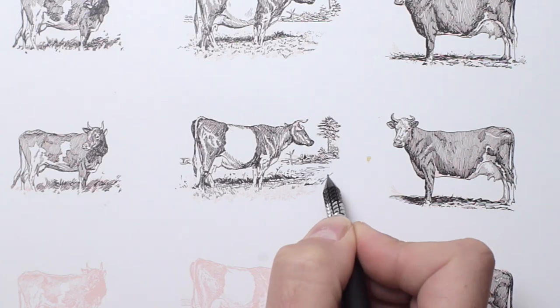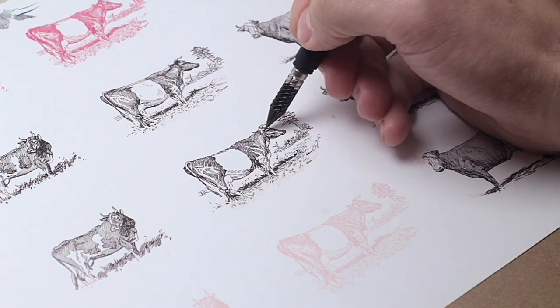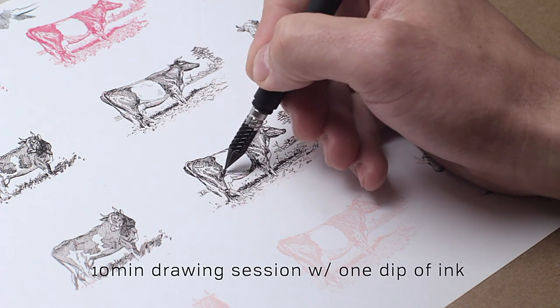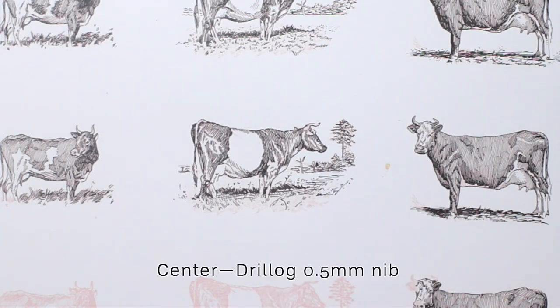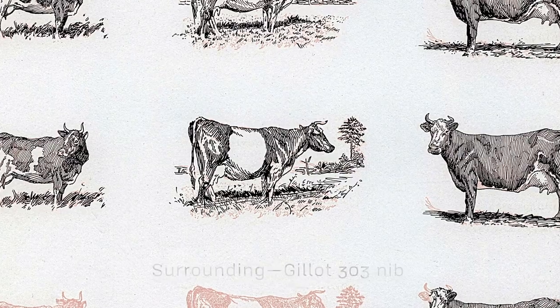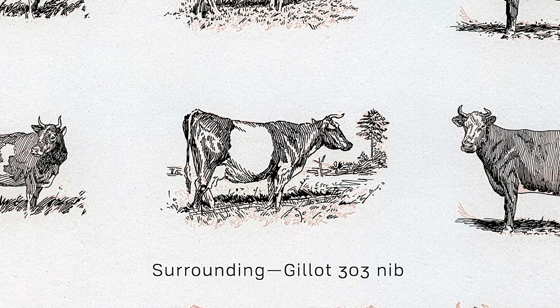And again, you can see the different line weights I was able to get out of the pen. When using a dip pen, that's really what I'm looking for—line weight variation and character. Your typical felt pen doesn't give you much of that, and I was happy to see consistency in the line quality, but still some variation in the line weight.